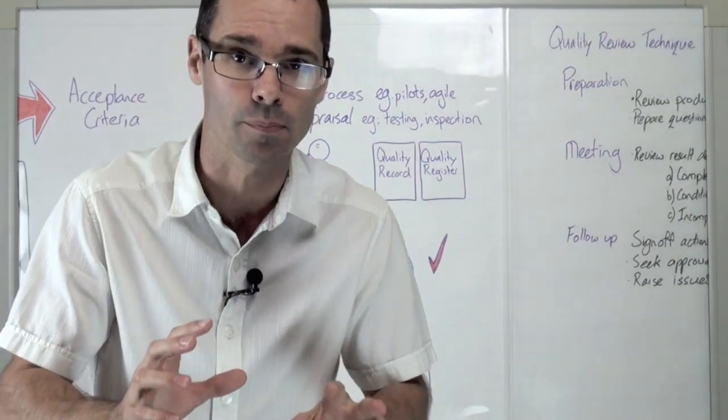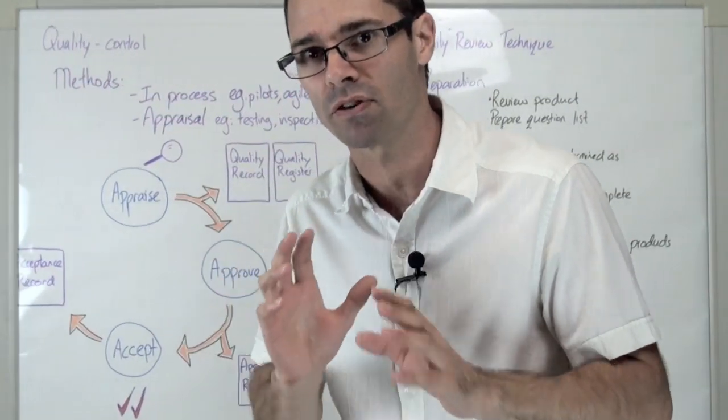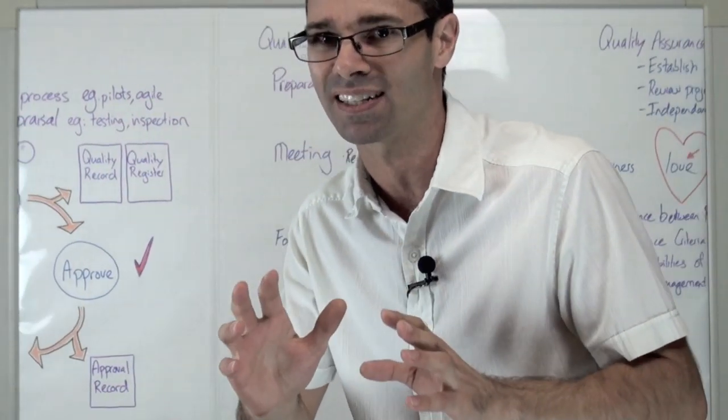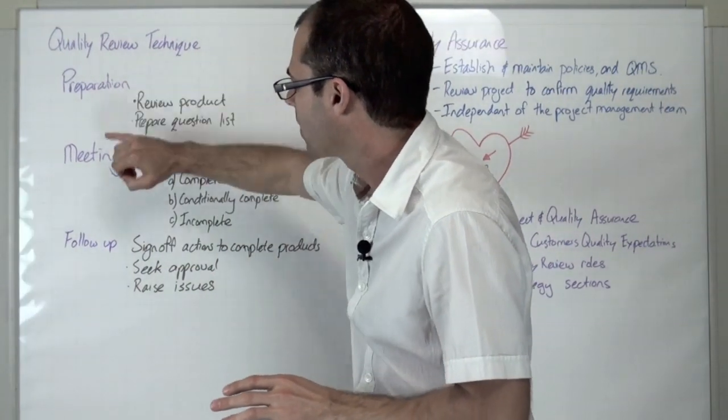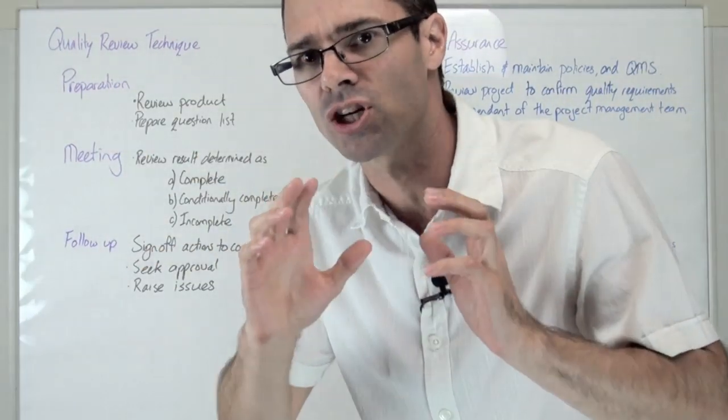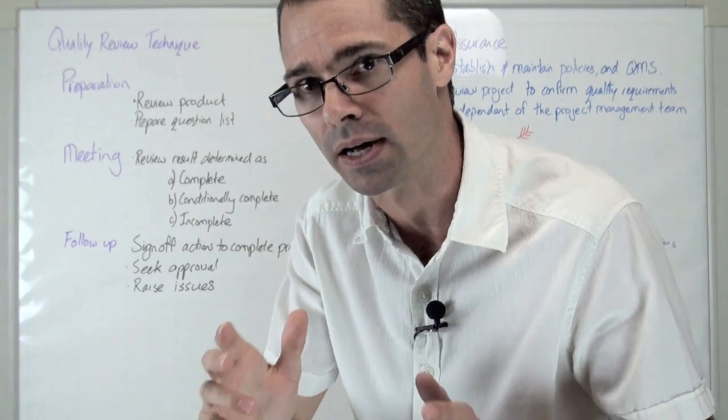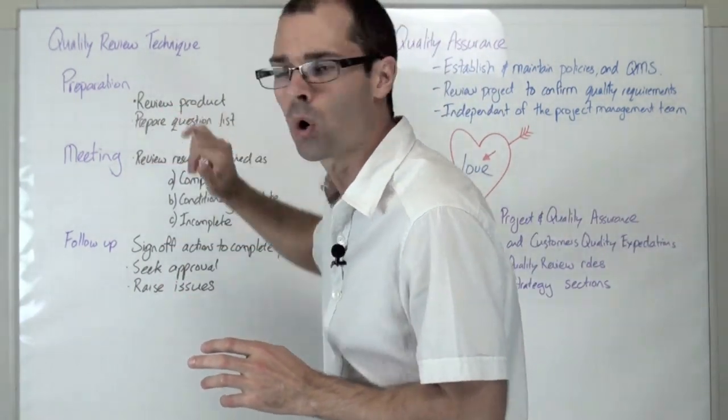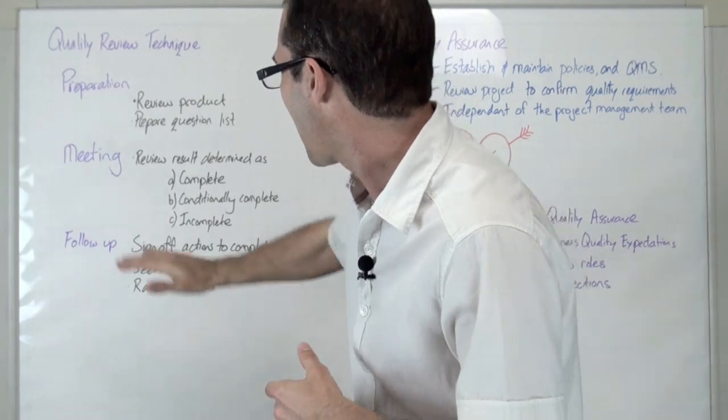Part of appraisal in Prince2 involves the quality review technique. Quality review technique has three steps: the preparation step, the meeting, and the follow-up. The preparation is when you actually evaluate the products of the project. You prepare a question list as well to present at the meeting.